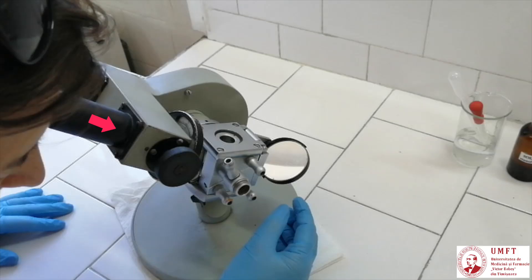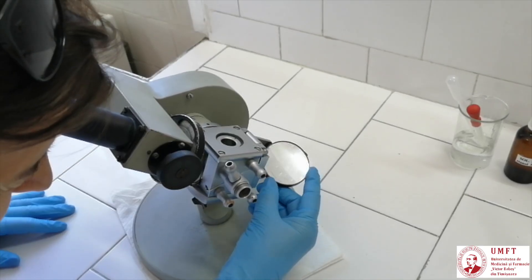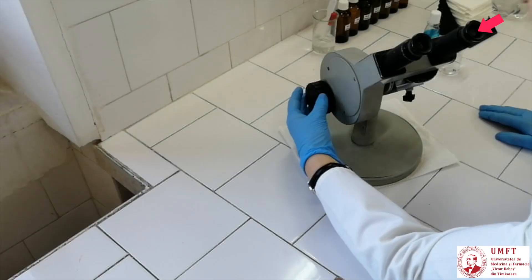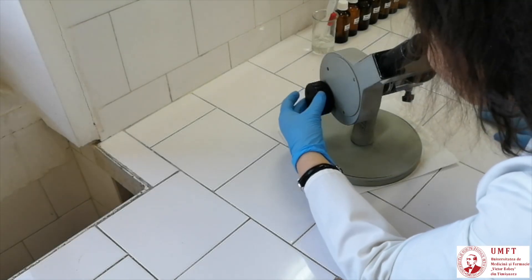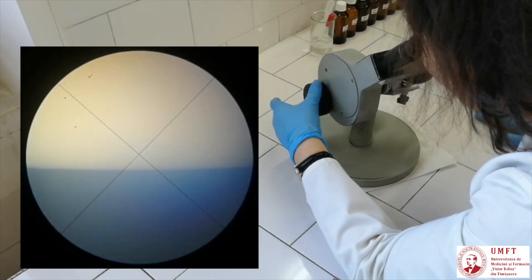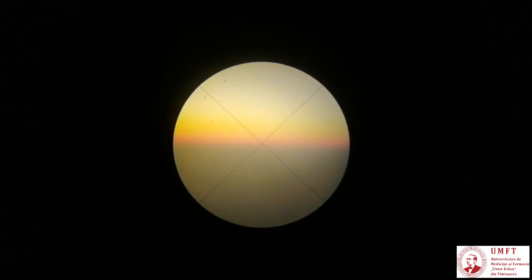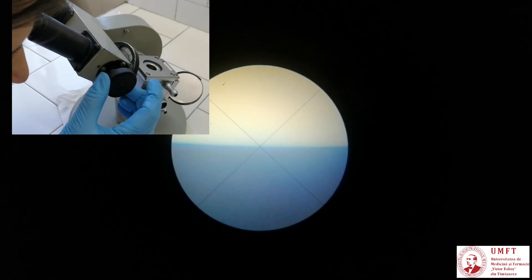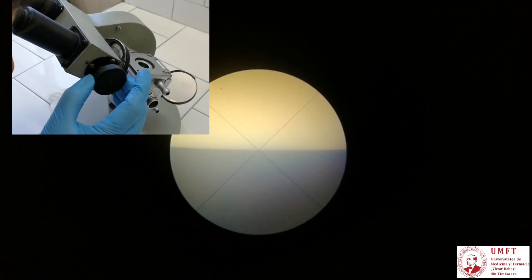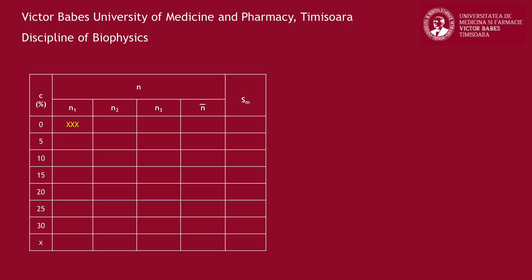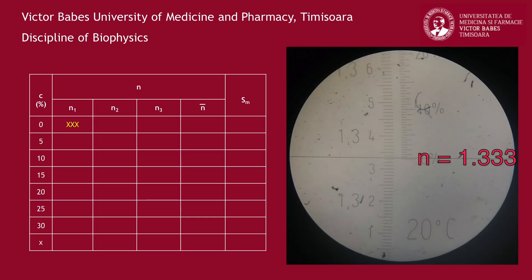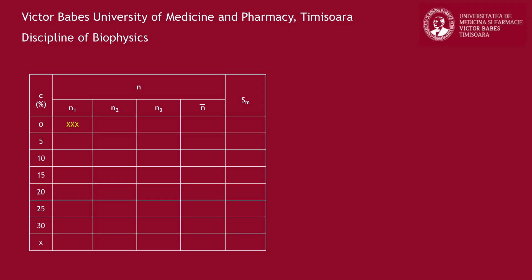Look through the measurement field viewer. Adjust the position of the mirror until the measurement field becomes as bright as possible. Then, while keep looking through the same eyepiece, rotate the big thumb wheel to bring the delimitation line between dark and light to the intersection of the two perpendicular lines. If the delimiting line between the dark and bright area is not sharp or is covered by a band of colors, use the small thumb wheel to correct it. Record the obtained values in the corresponding table of your book. If the measured refractive index of distilled water is very close to the value 1.333, you can conclude that the refractometer is calibrated and can be used for further determinations.